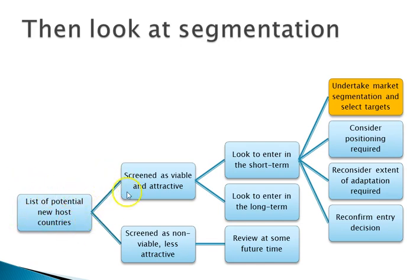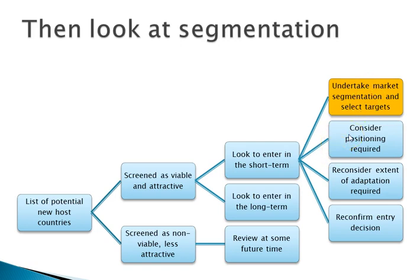Basically, for whoever we want to look at, we use the scoring model — if they look attractive and have passed the benchmark, great. If they haven't reached the benchmark, let's look at them down the track, because things change and opportunities change and our position changes. We can't do everything at once, so we set a priority — short term and longer term — and then we've made a decision based on the scoring model about which countries to enter.